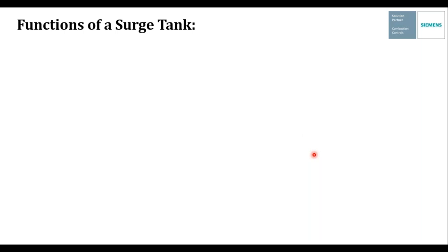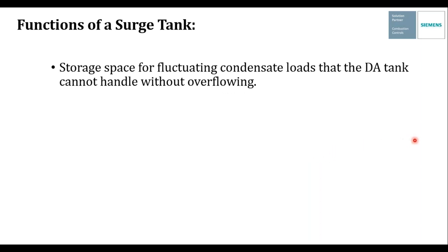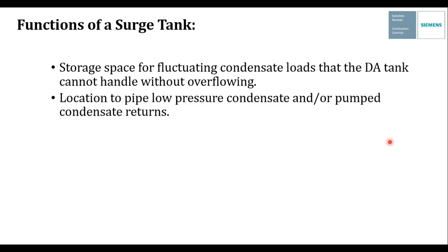Let's talk about the surge tank and where you might use one. It provides storage space for fluctuating condensate loads that the DA tank cannot handle without overflowing. If you have a large steam and condensate system with variable loads — like laundry, autoclaves, or kitchen equipment at different meal times — and the deaerator isn't capable of handling the surge of condensate, the surge tank is a great piece of equipment to ensure you don't overflow and lose water, chemicals, and heat down the drain. It also gives you a location to pipe low pressure condensate or pumped condensate returns.